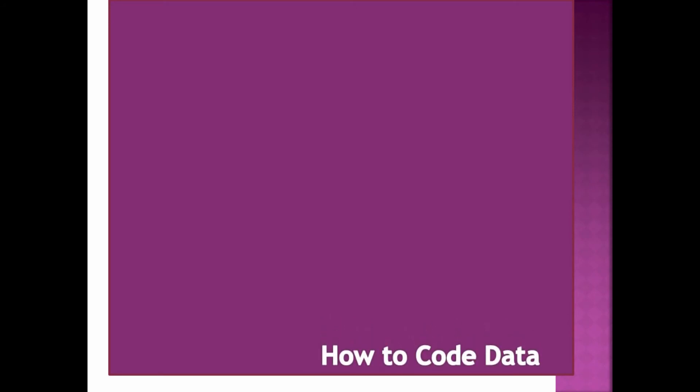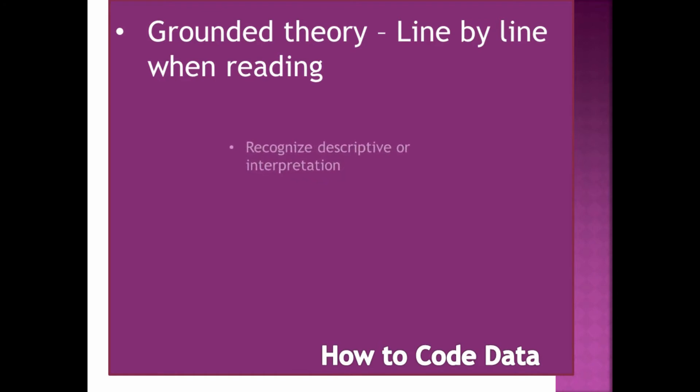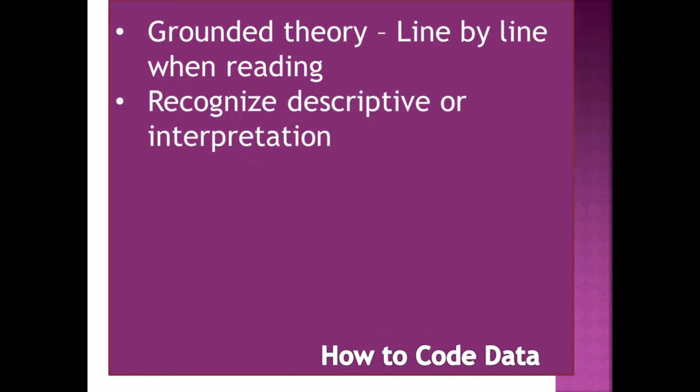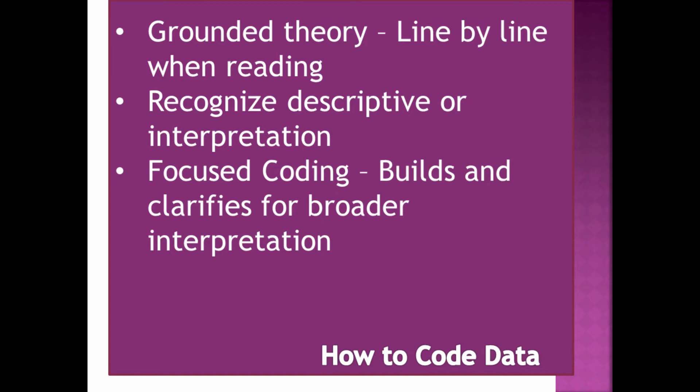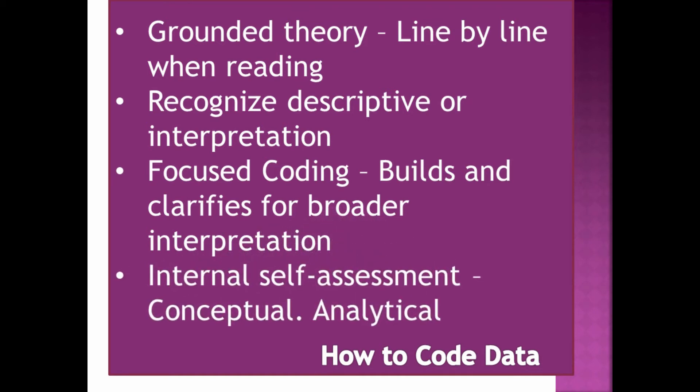How to code data? Grounded theory is a technique of line by line coding where the researcher develops categories as they are reading. Some codes will be literal or based in the text so that they are descriptive and some codes are based on interpretation. Focus coding builds and clarifies concepts during which the researcher moves to a broader interpretation of their data. Internal self-assessment moves into a more conceptual type of coding and this will reveal certain analytical dimensions and subcodes.